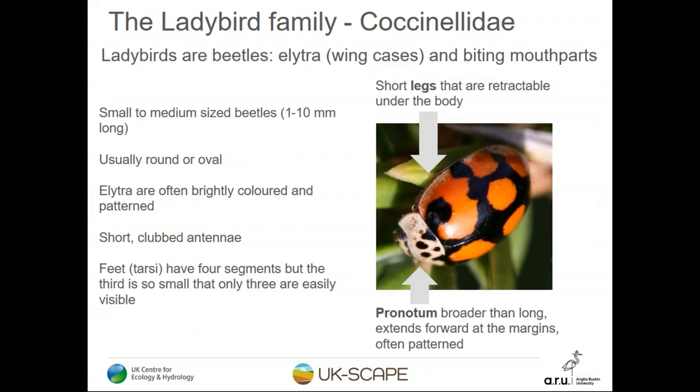The ladybird family is called the Coccinellidae — a beautiful name. Ladybirds are beetles with wing cases, often very brightly coloured — the technical name for wing cases is elytra. They are small to medium sized, usually quite round or oval. Their antennae are very short and clubbed, making them look quite different from leaf beetles which often have long antennae. If you look closely at their feet you'll see they have four segments, though the third is so small it's hidden.